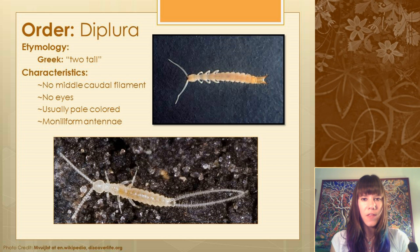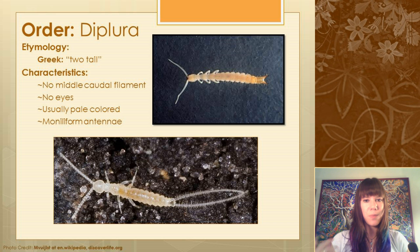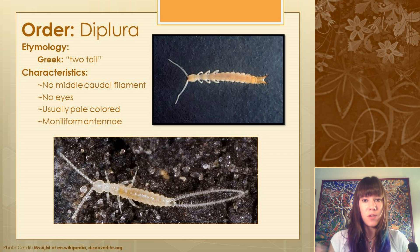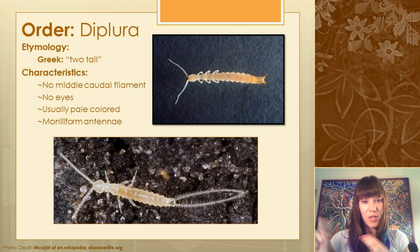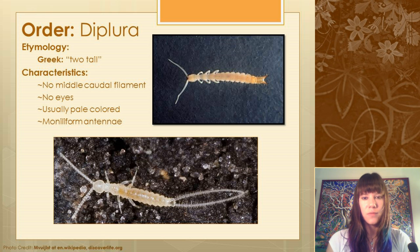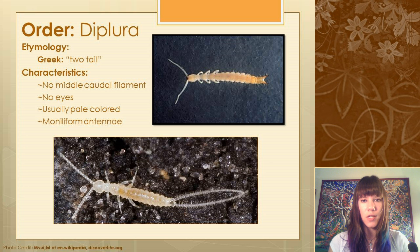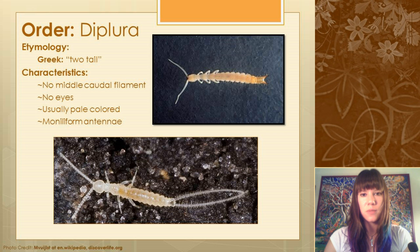Diplura are another group you can find in soil samples using a Berlese funnel. If you run one, you can expect to find Protura, Collembola, and Diplura in there — along with a ton of spiders.